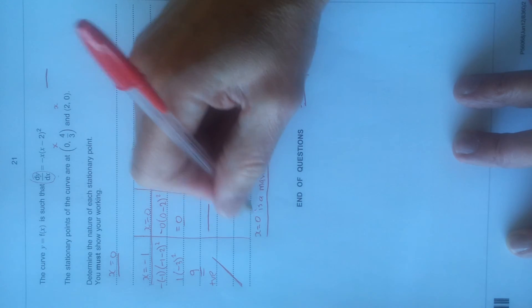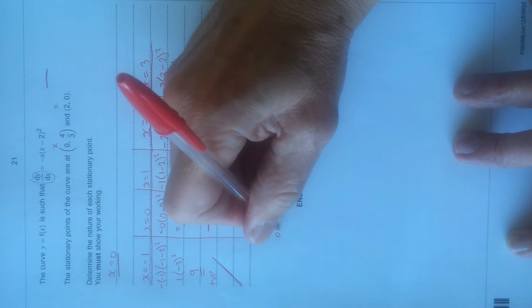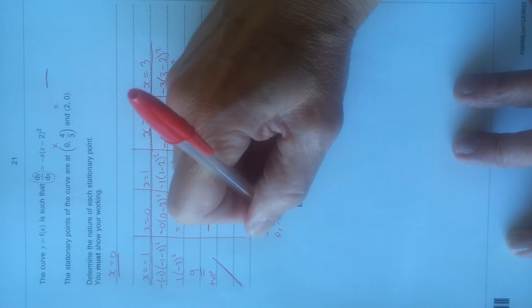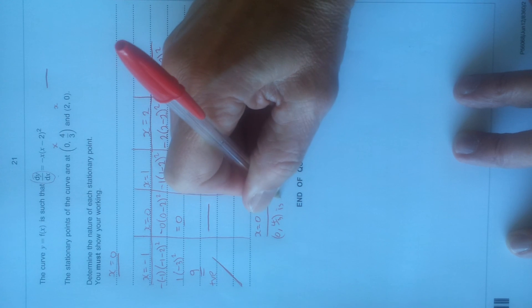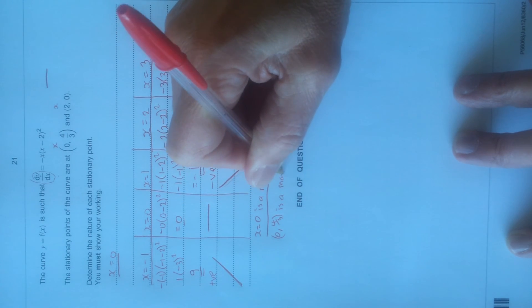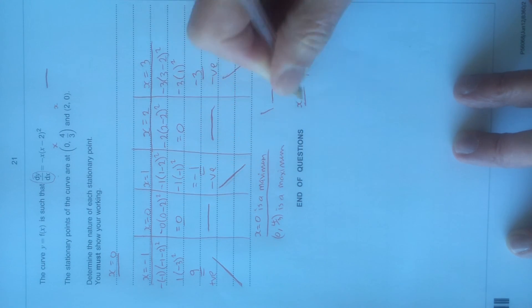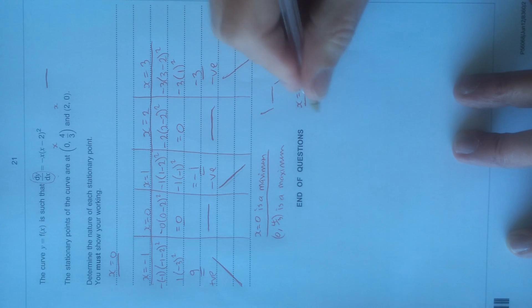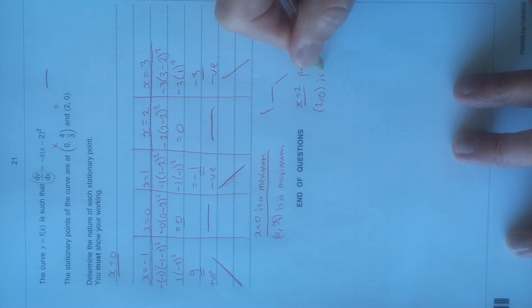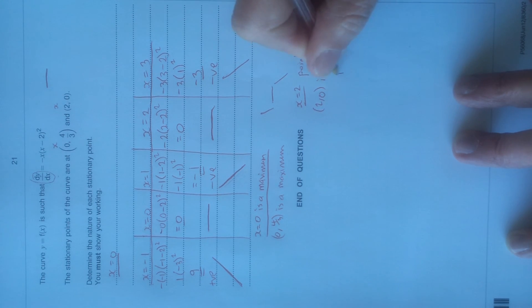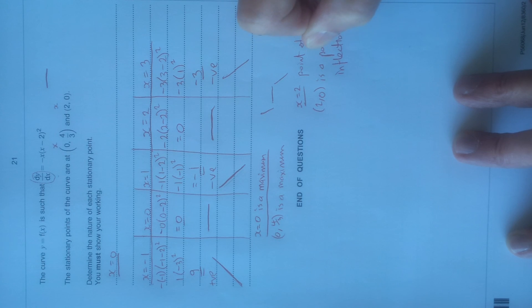So that means the coordinates (0, 4/3) is a maximum, and (2, 0) is a point of inflection. And that's it.